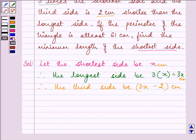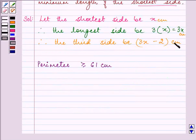Now, the perimeter of the triangle has to be at least 61, so it can be greater than or equal to 61 centimeters. Perimeter means adding all these sides: x plus 3x plus 3x minus 2 has to be greater than or equal to 61 centimeters.